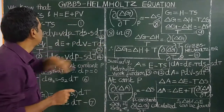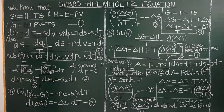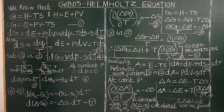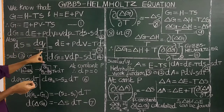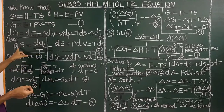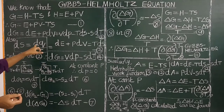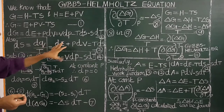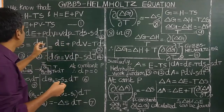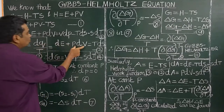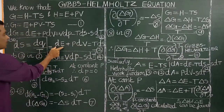Let us call this equation 2. From the second law of thermodynamics, the entropy change for an infinitesimally small process by supplying infinitesimal heat at temperature T is: dS equals dQ by T. From the first law of thermodynamics, when the supplied heat creates a small change, it does work and also increases the internal energy.